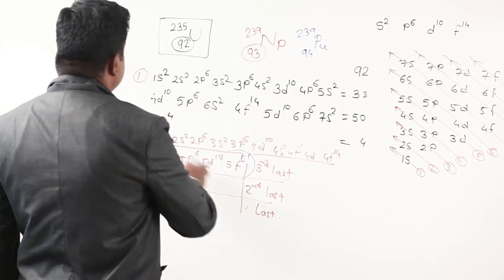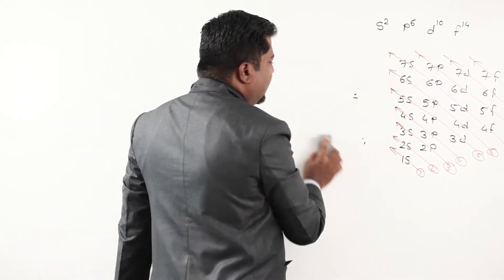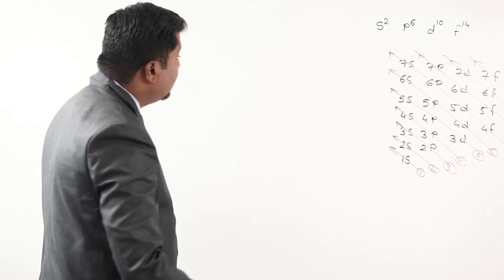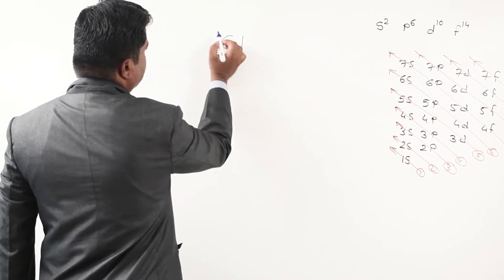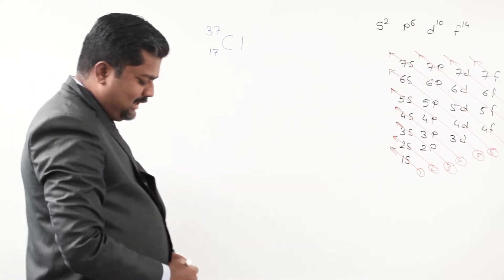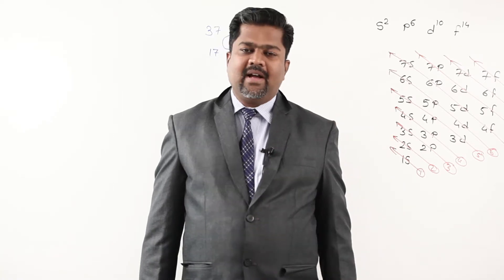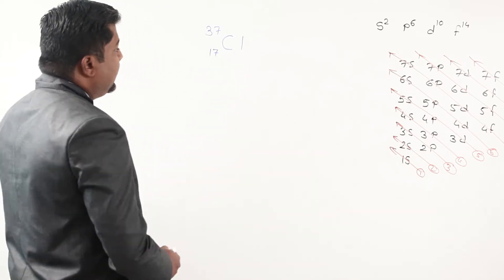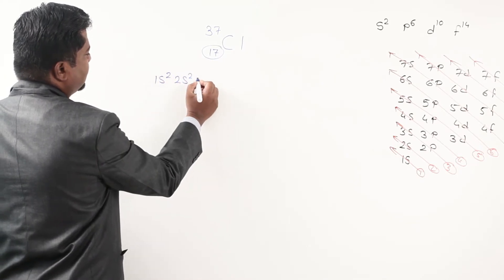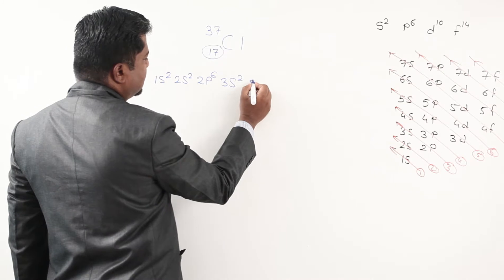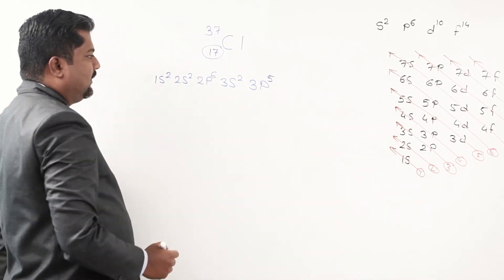After this tremendous exercise, we switch to simpler examples. Electronic configuration of chlorine: atomic number 17, mass number 37. Try it yourself first. It is 17 electrons to fill: 1s2, 2s2, 2p6, 3s2 — that is 12 electrons — remaining 5. So 3p5. Very simple.